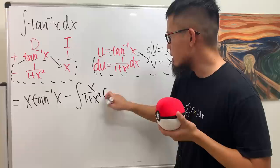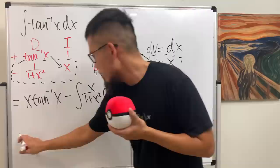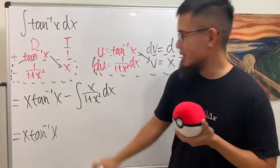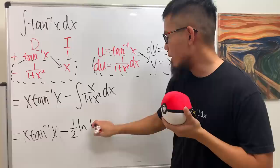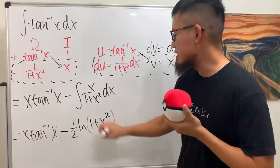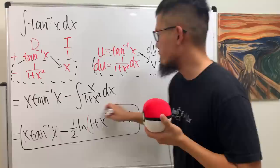We stop because when we multiply this row — x and 1 over 1 plus x squared — we can actually integrate x over 1 plus x squared. Let me finish this: the integral gives us a minus one half ln of (1 plus x squared). Because 1 plus x squared is always positive, you just need parentheses — no absolute value needed. Plus C, and you're done.